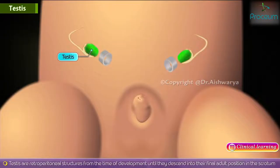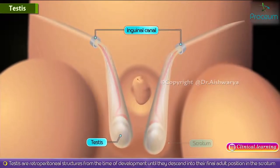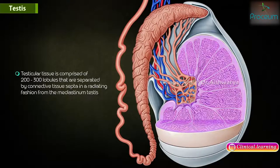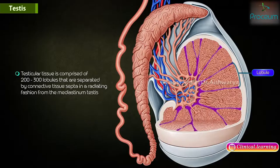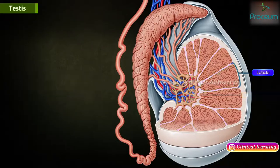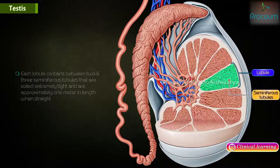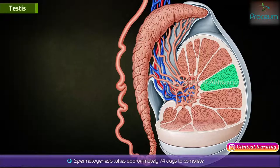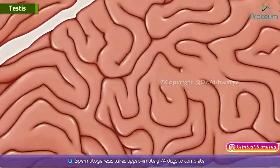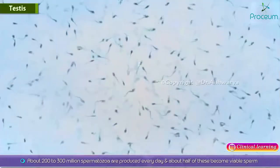The testes are retroperitoneal structures from the time of development until they descend into their final adult position in the scrotum. The testicular tissue is comprised of 200 to 300 lobules separated by connective tissue septa radiating from the mediastinum testis. Each lobule contains between two and three seminiferous tubules that are coiled extremely tight and approximately one meter in length when straight. It is here that spermatozoa and sex hormones are produced. Spermatogenesis takes approximately 74 days to complete, and about 200 to 300 million spermatozoa are produced every day, with about half becoming viable sperm.